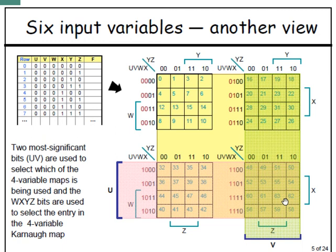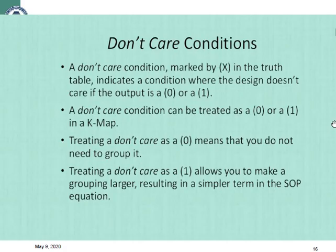In this way, the six variable K-map has four maps where the fifth variable U and sixth variable V take values 00, 01, 10, and 11 respectively. The map where both U and V are zero is one such sub-map. This is how a six variable K-map is constructed.